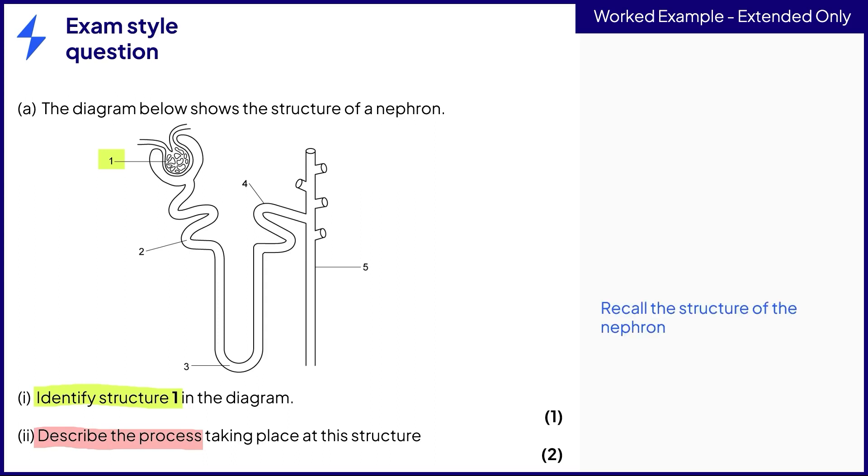Once you can identify the structure, it should be easier to recall the process that takes place there. Remember that the command word describe requires you to give a detailed answer. Let the mark allocation be a guide as to how much detail to give.